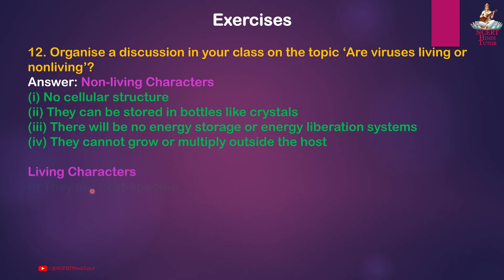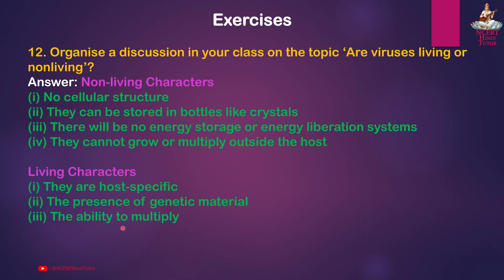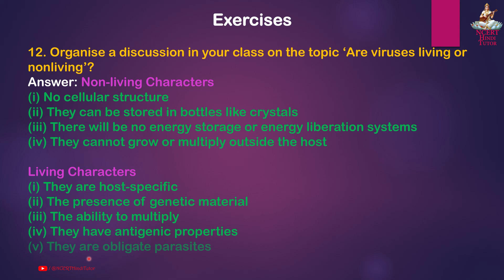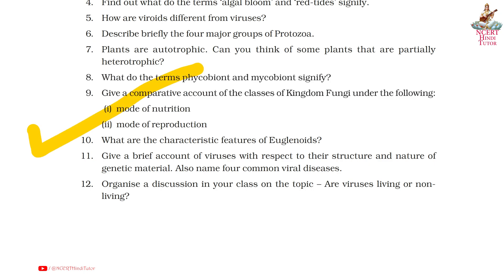Living characters: first, they are host specific; second, presence of genetic material; third, the ability to multiply; fourth, they have antigenic properties; fifth, they are obligate parasites; sixth, mutations occur. We have completed all question answers. If you like the video, kindly like it and share it with your friends. Thank you for watching.